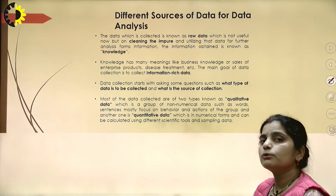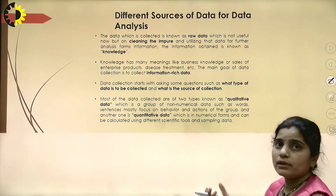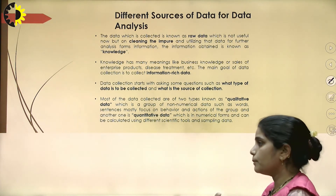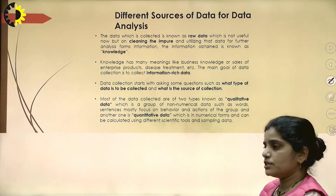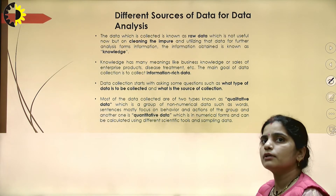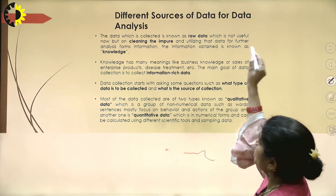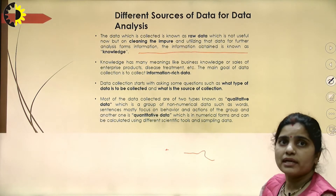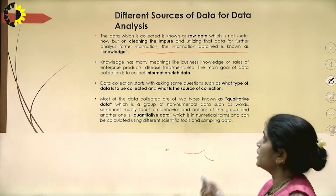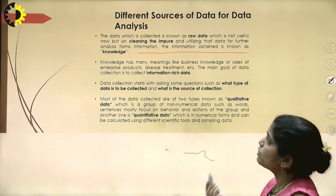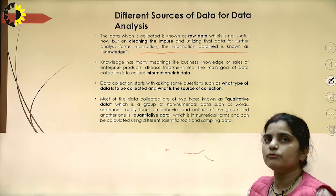I would like to clarify the difference between data and information. The data we collect is known as raw data, which is not useful on its own. But after processing or cleaning that impure data, what we get is known as information. The information obtained then becomes knowledge, which can be applied in any field — business knowledge, sales, enterprise products, or disease treatment.